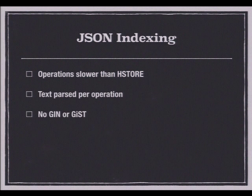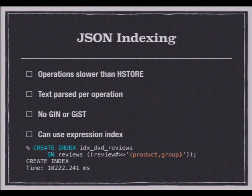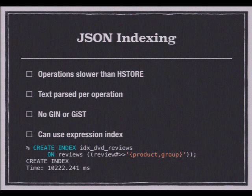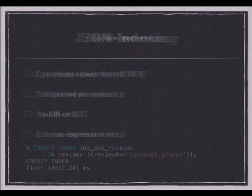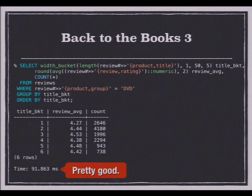On JSON there's no GIN or GiST index, no equivalence operator, no B-tree indexes. However, as with XML you can use an expression index. If I index the product_group scalar value in this data set, when I run the query again we're down to just 91 milliseconds. So expression indexes are again a big win if you know in advance exactly what you need to look up.